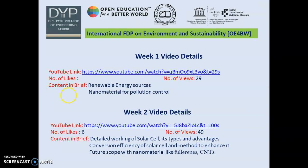This is the information about my first two videos of activities of this workshop. In the week one video, I explained different renewable energy sources like solar energy, ocean energy, wind energy, and nanomaterials for pollution control. In the second video, I explained the detailed working of solar cells, its types and advantages, what is the conversion efficiency of solar cells and different methods to enhance it, and the future scope of solar cells using nanomaterials like fullerene, carbon nanotube, etc.